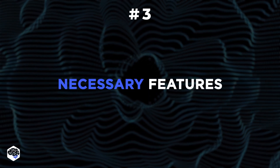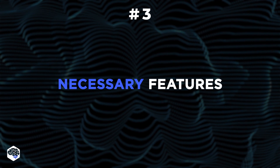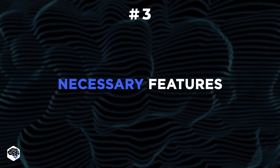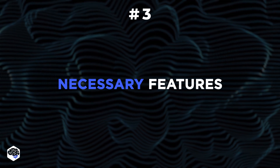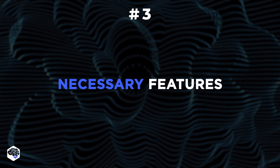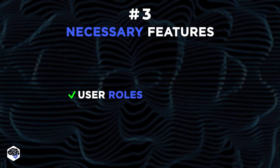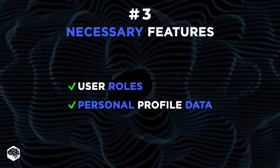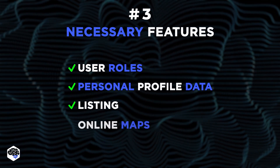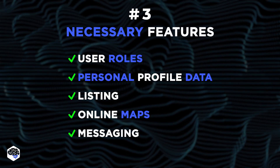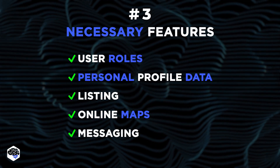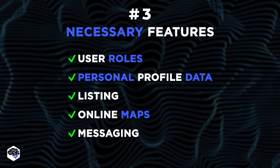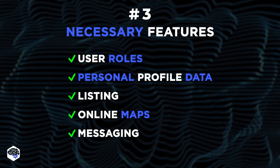After you've assembled your dream team, the next vital step is identifying the necessary features that your Airbnb-like app must have. We had a similar experience at Jelvix, and the key features of the project were user roles, personal profile data, listing, online maps, and messaging — all aimed at ensuring user engagement and satisfaction.